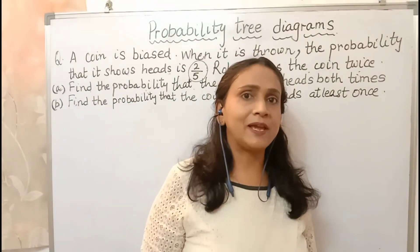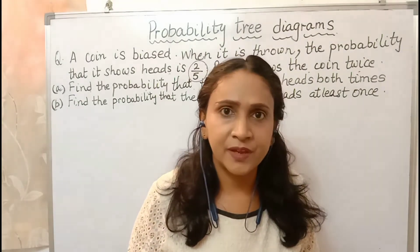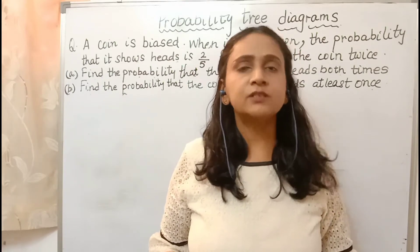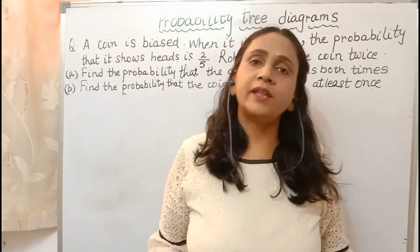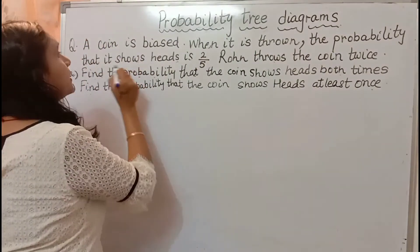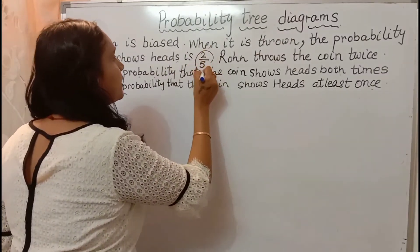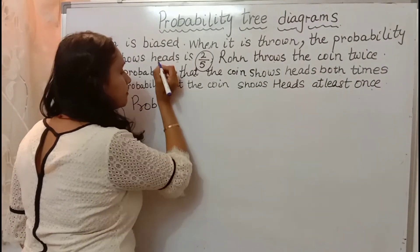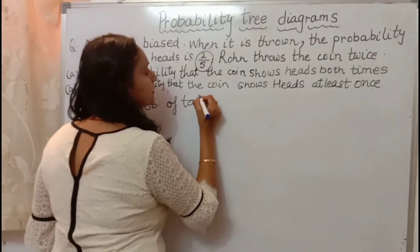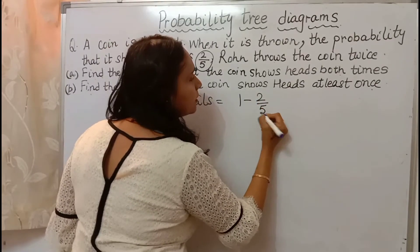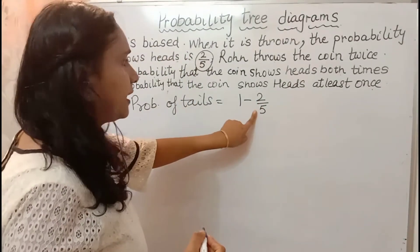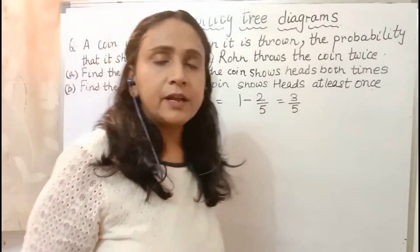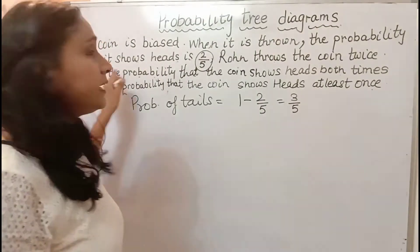First, we will make a probability tree diagram. Children, do you know the sum of probabilities is always 1 when they are in fraction. Here it is shown that the probability of head is 2 by 5. So the probability of tails will be 1 minus 2 by 5, because the sum is 1 and head is 2 by 5. So it is 3 by 5.